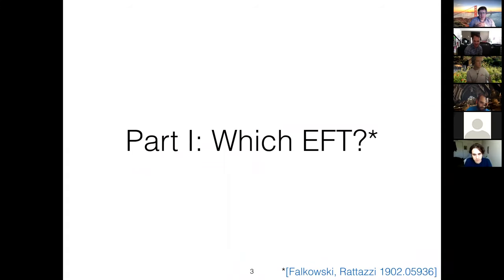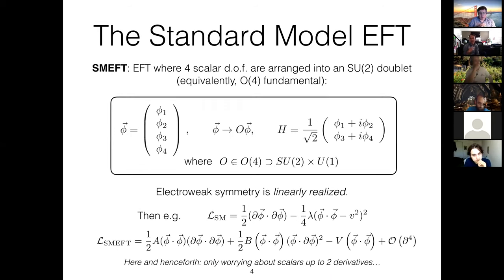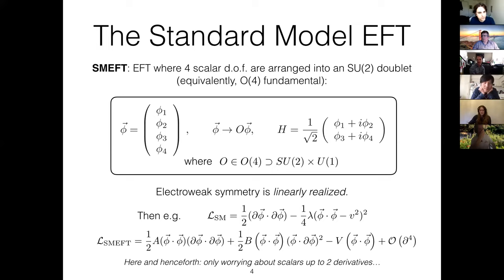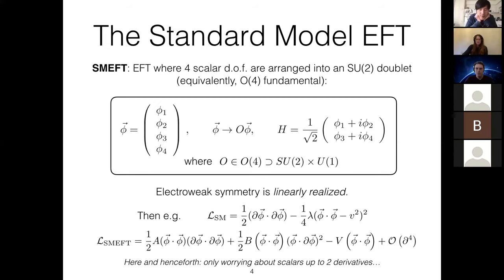So, part one: which EFT. The title of this section comes from a paper by Riccardo Rattazzi and Adam Falkowski from early 2019. There is a question: if you want to come up with an EFT extension of the standard model appropriate for describing modifications of the Higgs sector, you have a choice in how you package the Higgs degrees of freedom. The first option is to take the gauge-invariant degrees of freedom in the standard model, including a scalar doublet for the Higgs, and construct an EFT out of all possible relevant operators. This is what we know as the Standard Model EFT, or SMEFT.